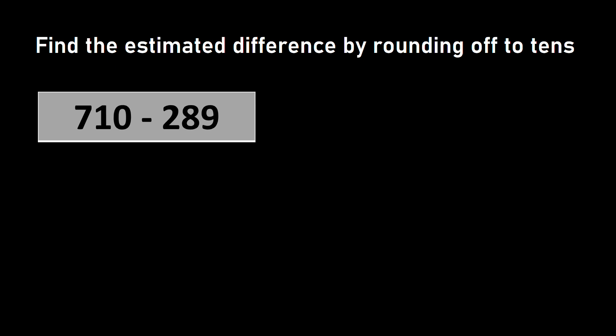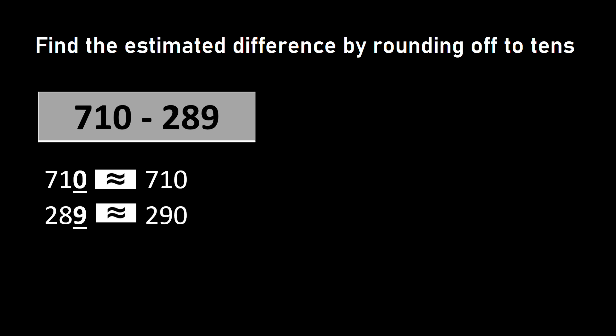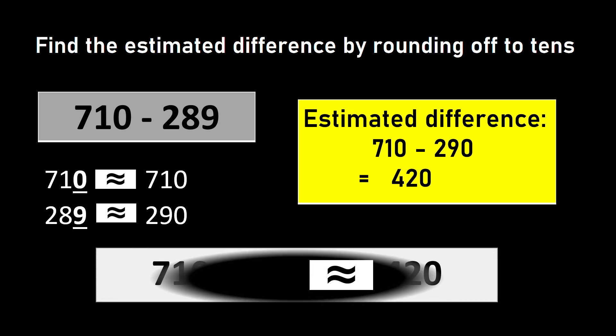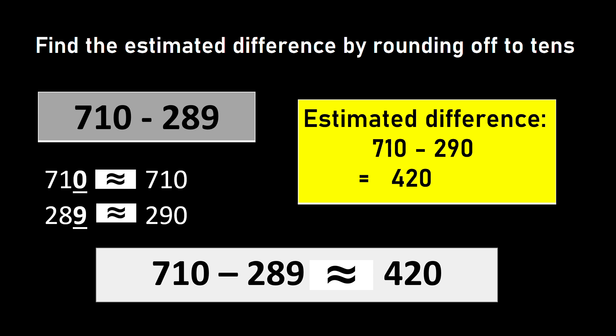Now let us look at a few examples of three-digit numbers. I have 710 minus 289. In 710, I have 0 in ones place, so it is already rounded to its tens — no need to round this off again. For 289, I have 9 in ones place, so it will be rounded up as 290. So the estimated difference will be 710 minus 290, which is equal to 420. Hence I say 710 minus 289 is approximately equal to 420.